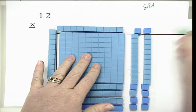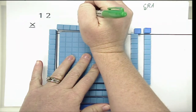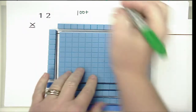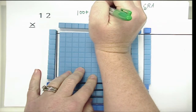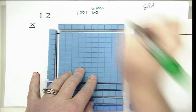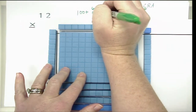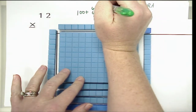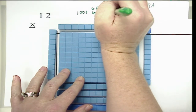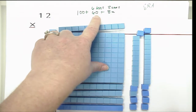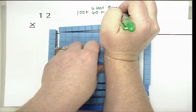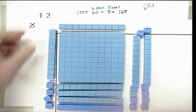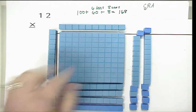So here I have a hundred. And I am going to count my tens — I have one, two, three, four, five, six tens, which is equal to sixty. And I can even count by tens if I need to. And my ones — I can subitize this — I have four and four, so I have eight ones, which is equal to eight. Now I can add up one hundred plus sixty plus eight, which is equal to one hundred and sixty-eight. So that is how you model the problem twelve times fourteen using the area model with base ten blocks.